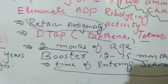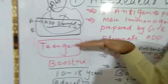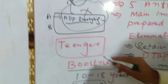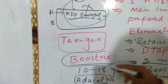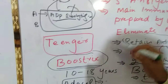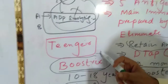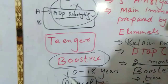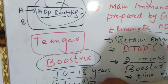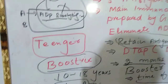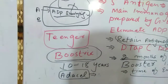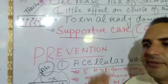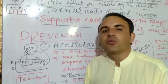Teenagers are also victims of this disease. For teenagers, another vaccine called Boostrix can be used, which covers the age range from 10 to 18 years. Another vaccine called Adacel is also available for immunization.